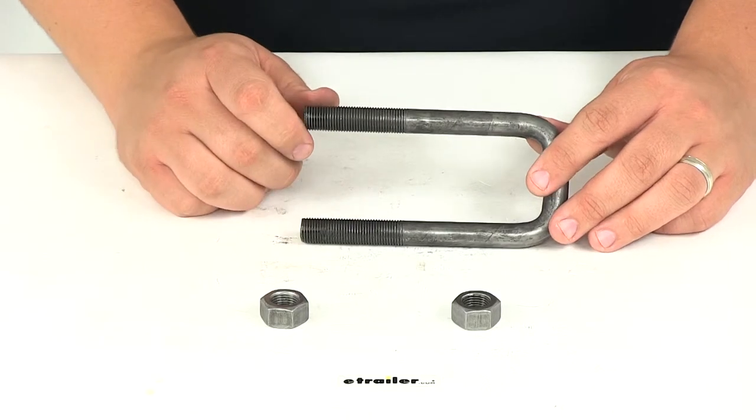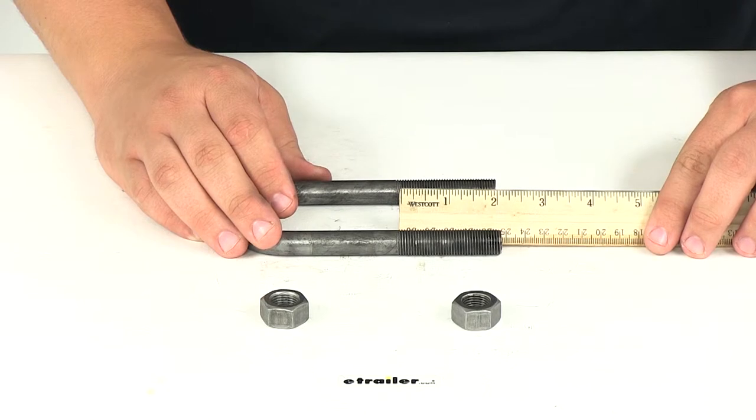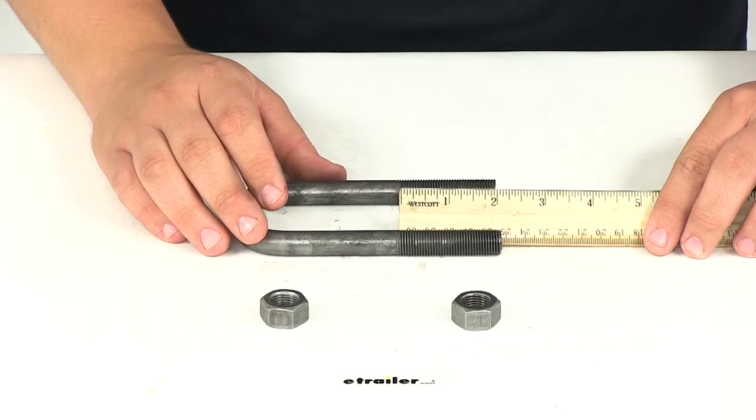Each side of the U-bolt is threaded. If we take a measurement of the beginning of the threaded portion to the bottom of the bolt, it's going to give us a measurement of two and one eighth of an inch.